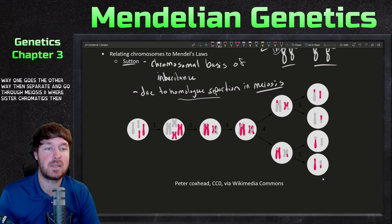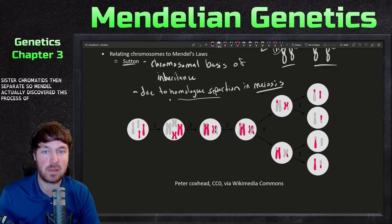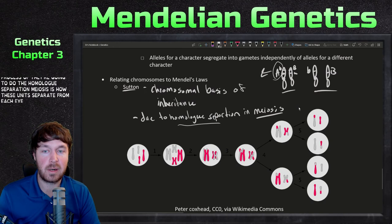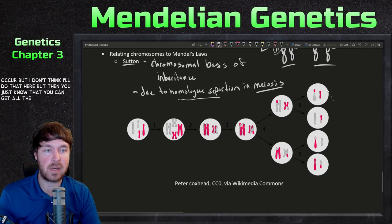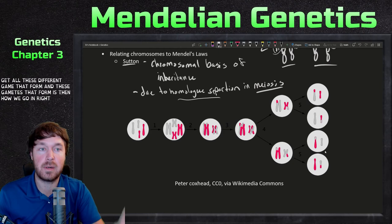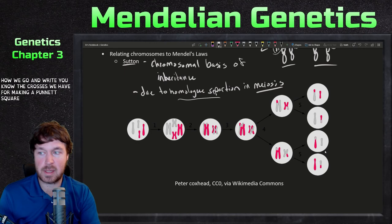One chromosome goes one way, one goes the other way. They then separate and go through meiosis two, where sister chromatids separate. So Mendel actually discovered this process — due to homologue separation, meiosis is how these units separate from each other. You can get all these different gametes that form, and these gametes are how we write the crosses for making a Punnett square.